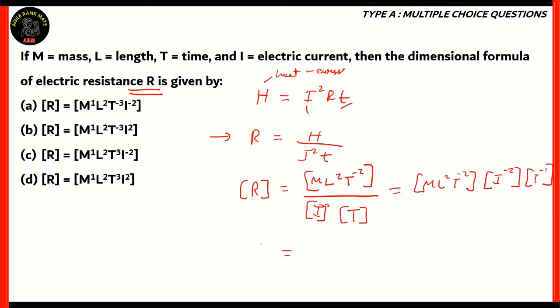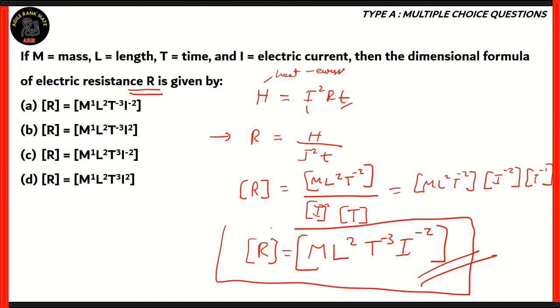So, therefore, what we get is M L squared T power minus 2 multiplied with I powered minus 2 multiplied with T powered minus 1. So, therefore, the dimensional formula of resistance will be mass times L squared times T power minus 3, and then we have I raised to minus 2, so M L squared T power minus 3, I powered minus 2 is the correct option among the following.